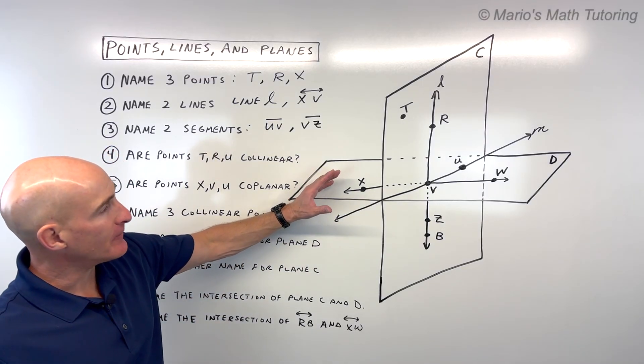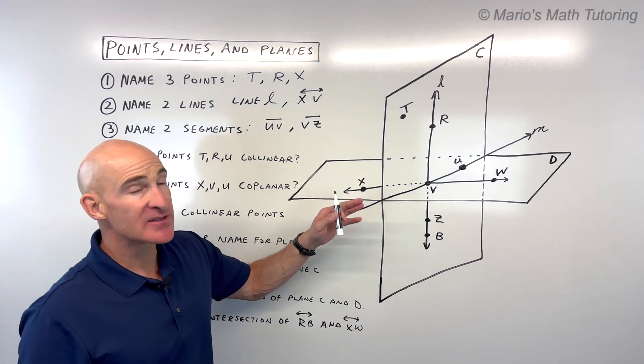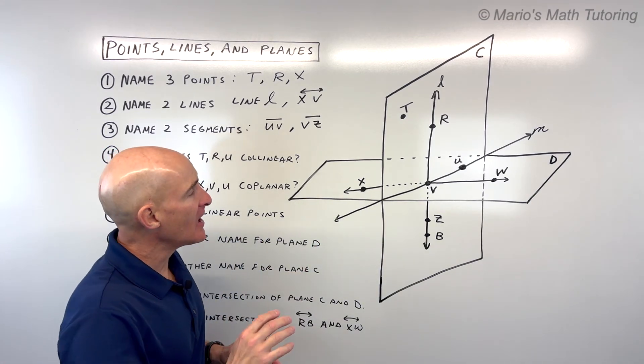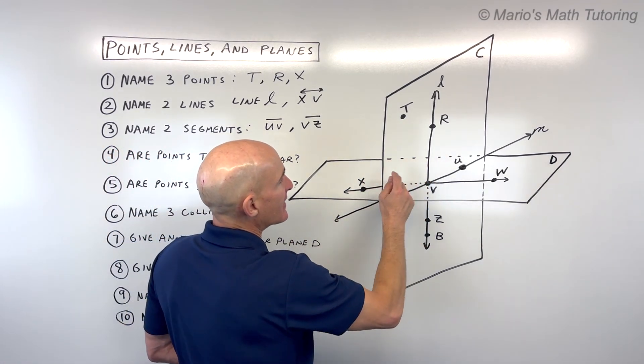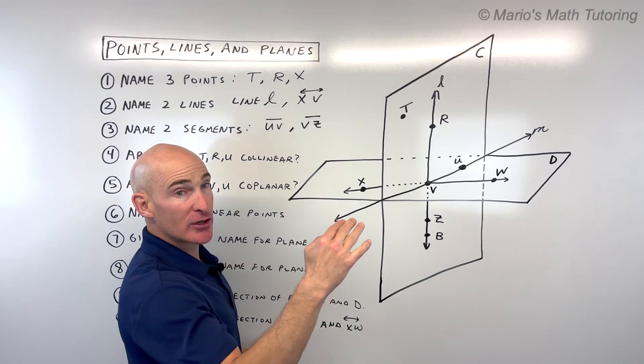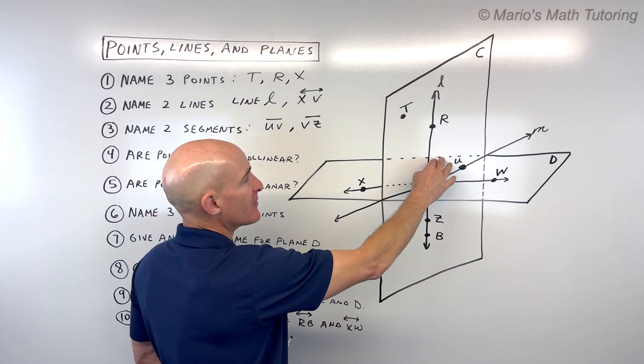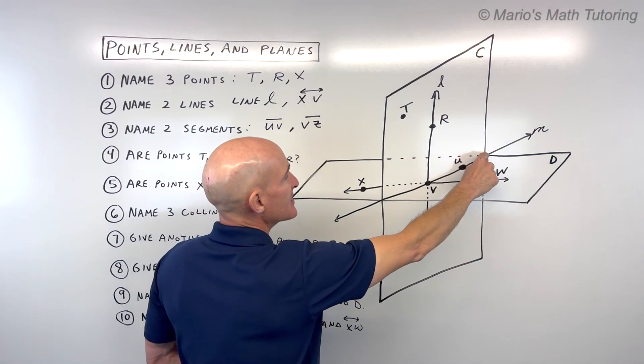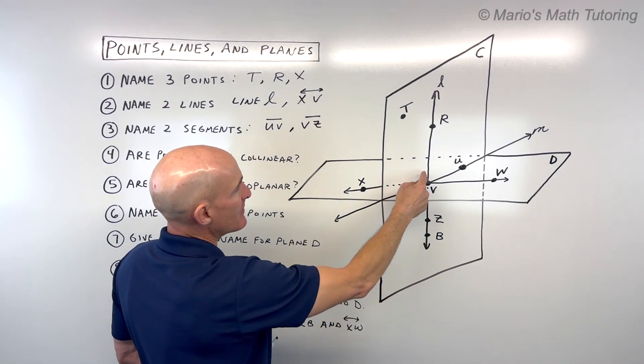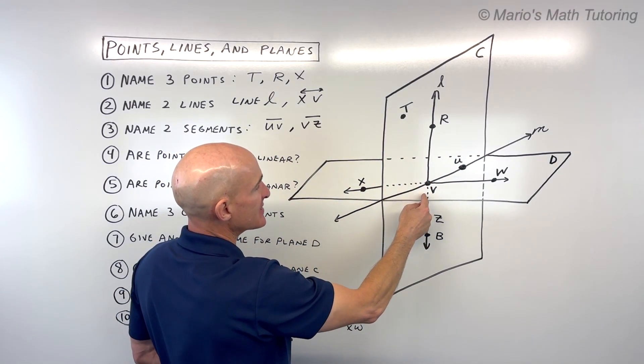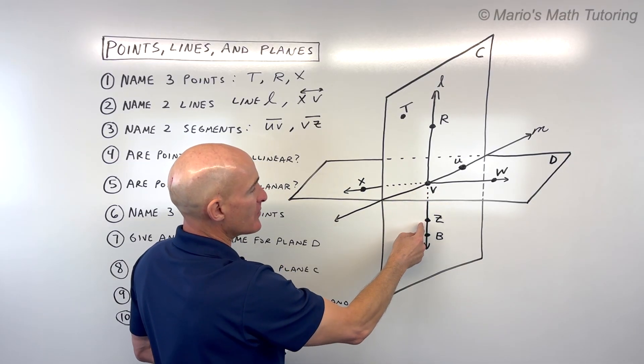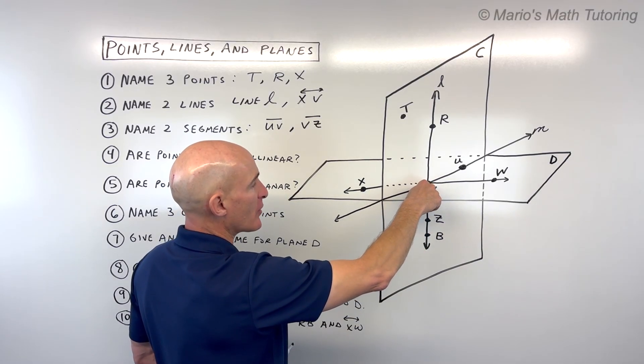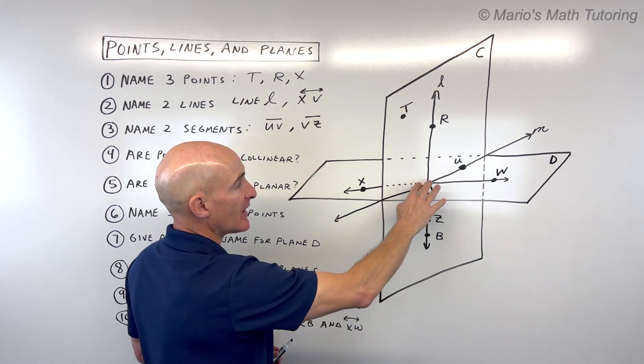One quick note about this diagram. Sometimes when students look at this, their eyes go a little bit wonky. When you see the dash or dotted pieces, that means you're looking through, almost like a piece of glass that's semi-transparent, and you can see that this continues, this line here. It indicates that it's going through this plane.